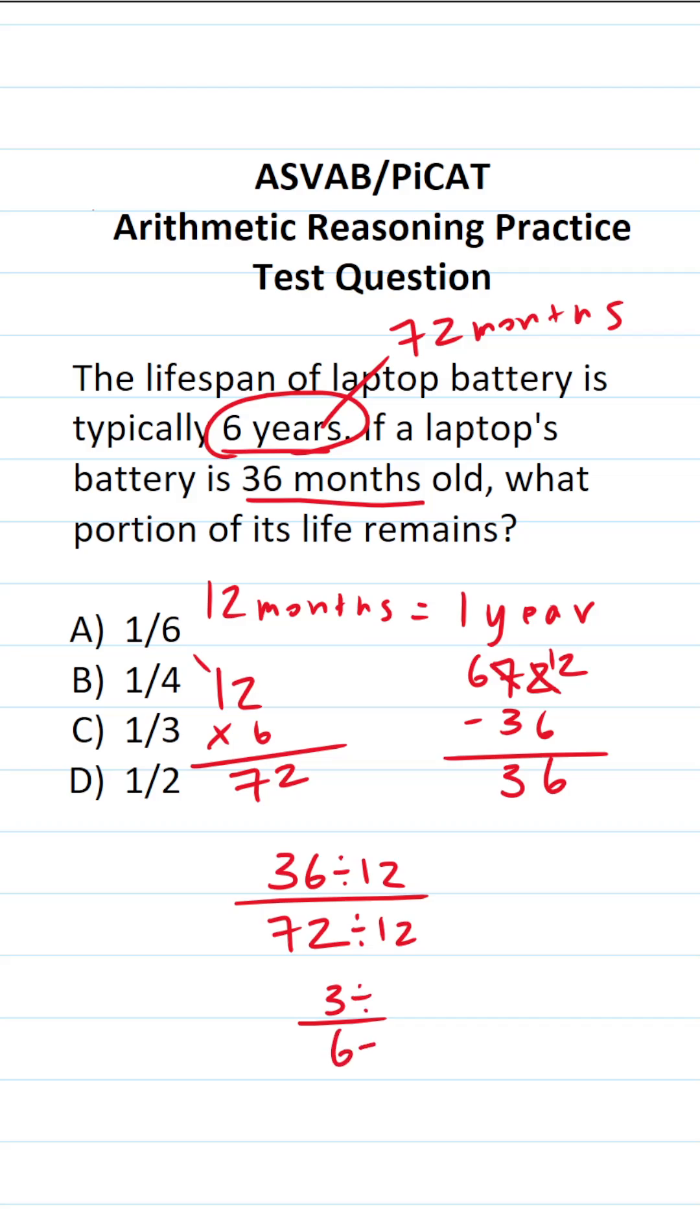But we can reduce this one more time by a common factor of 3. 3 divided by 3 is 1. 6 divided by 3 is 2. So one half of its life is remaining. So the answer to this one is D.